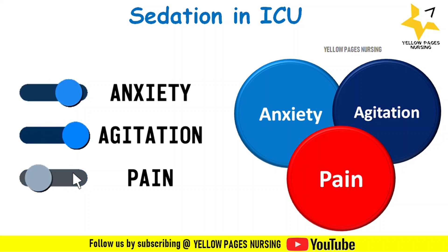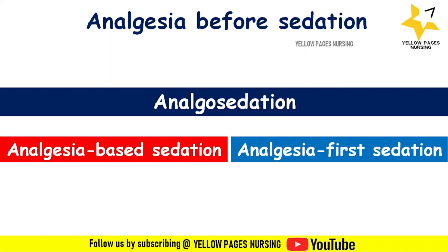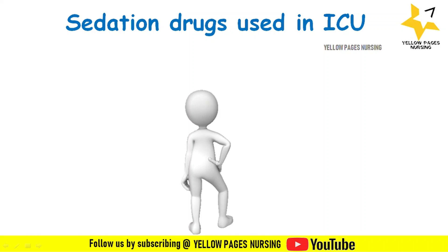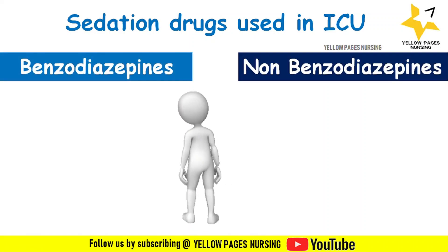This brings us to analgesia before sedation, also called analgo-sedation. There are two types: analgesia-based sedation, which refers to the use of an analgesic instead of a sedative to reach the sedative goal, and analgesia-first sedation, which refers to the use of an analgesic before a sedative to reach the sedative goal. There are two categories of sedation drugs used in ICU: benzodiazepine and non-benzodiazepine sedatives.